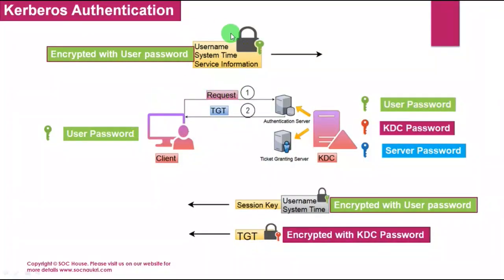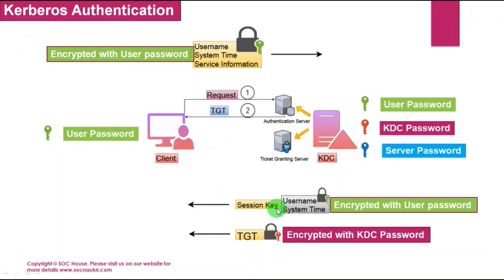All this information is encrypted with the user password hash and sent to the Authentication Server. The Authentication Server in the KDC has the password for all user and computer accounts, and it decrypts the data using the user password hash stored in Active Directory. It verifies all the details in the request, and if valid, replies with a session key and a TGT. The session key is encrypted with the user password and contains the username and system time. The TGT is like an approval, also encrypted with the KDC password, and is valid for several hours. If it expires, the client must request a new TGT from the Authentication Server.